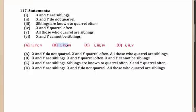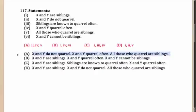It is a little difficult to keep shifting through these statements, so I have listed down all the options here: A, B, C and D. Option A is statements 2, 4 and 5: X and Y do not quarrel; X and Y quarrel often; all those who quarrel are siblings. This does not even make sense — there is nothing in common that you can eliminate. Option B: X and Y are siblings; X and Y quarrel often; X and Y cannot be siblings. Once again the options are not making sense, so you forget this one.